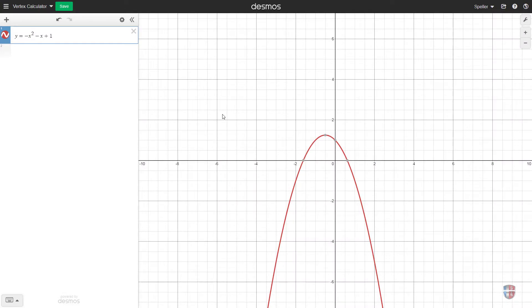Welcome back. In today's tutorial, we're going to use Desmos to create a model to actually calculate the vertex of a quadratic equation. So here we have this quadratic equation: negative x squared minus x plus 1, and in red we see the graph of that equation.